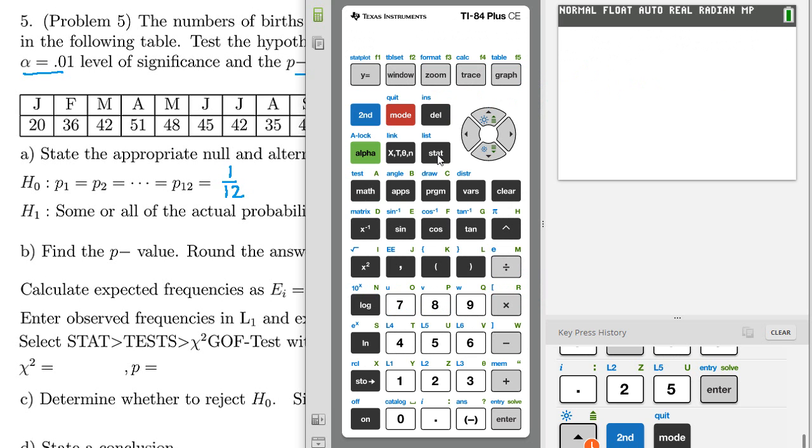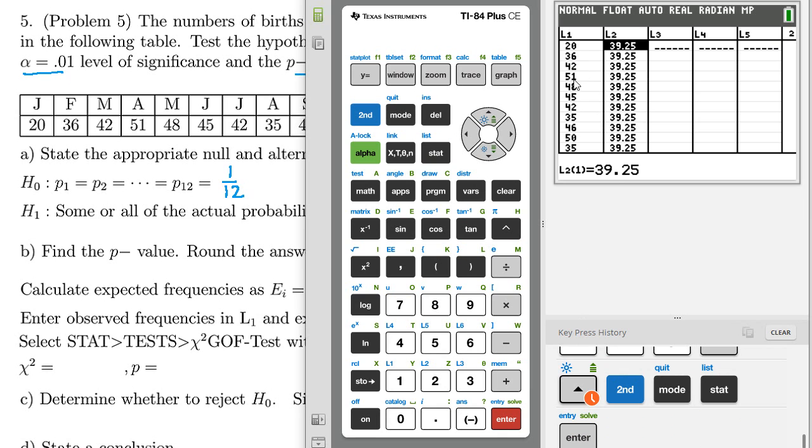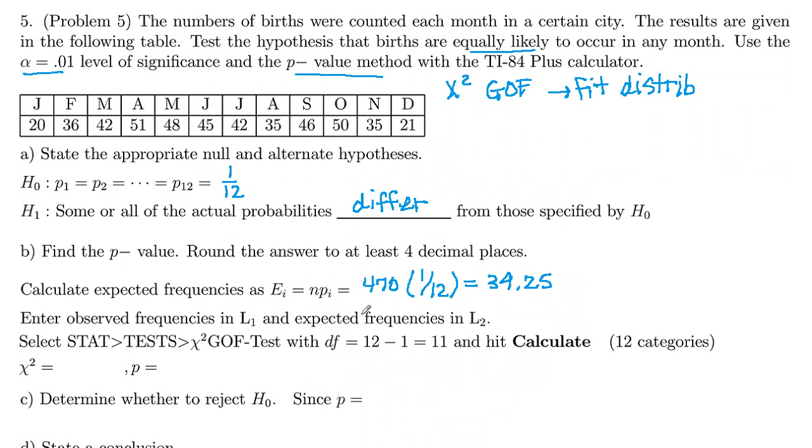So we are going to go to stat and then edit. And you can see in list 1, I've got the observed frequencies. That's this data here. And then in list 2, they're all 39.25, which was our expected frequency here. It's the same for every month because we're testing to see if all the proportions are the same.